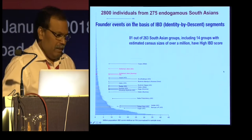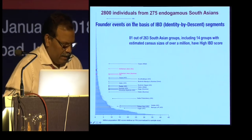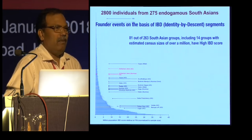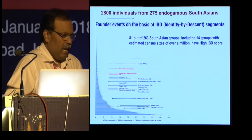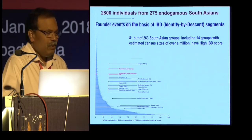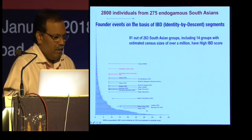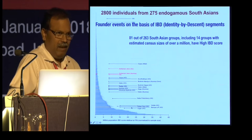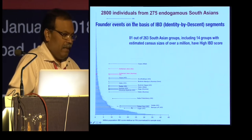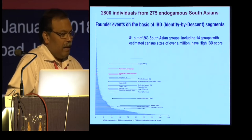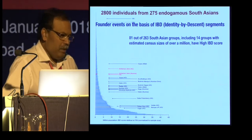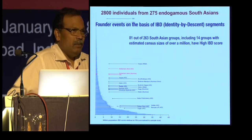Some well-known populations — such as the Jewish population and the Finnish population — are known to have high frequencies of recessive disease, yet they have a much smaller IBD score compared to a large number of Indian or South Asian groups, by several fold. This suggests that although the samples were collected for different purposes, the high IBD and founder events are very predominant among them, indicating that a large number of population groups in India are likely to have recessive disease.